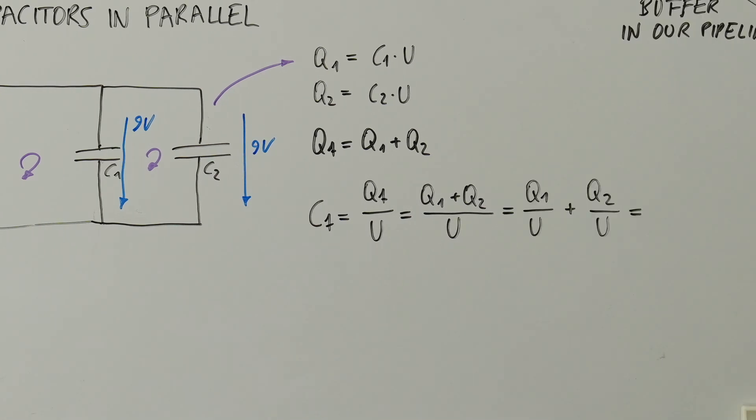If we now separate the fraction, we get Q1 over U plus Q2 over U, which is the same as C1 plus C2. This means that as the voltage is the same for both, we can add the capacitances to acquire an equivalent capacitance. The formula is similar to the one that we used for the resistors in series.